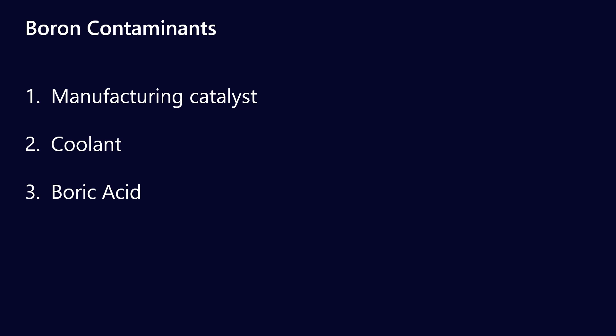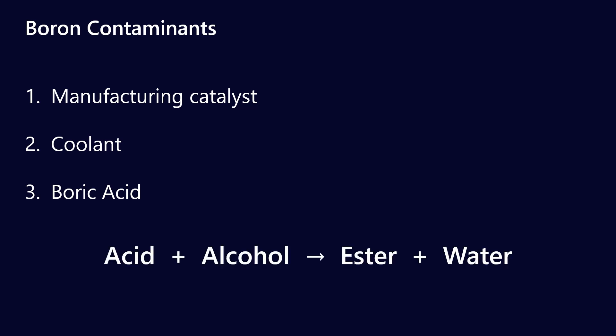Boric acid can also be a contaminant. If you remember we talked about ester synthesis: acid plus alcohol makes ester plus water. Well this reaction can actually go in reverse — that's called a hydrolysis reaction. So water plus ester can give you alcohol plus acid, and that's how borated esters can form boric acid. In some cases you may not want that. For example, there are issues in wind turbine gearboxes where older-style gear oils with genesis in engine oil formulations can form boric acid, which precipitates out, clogs filters, and causes problems. So boric acid, although sometimes used as an additive, can also act as a harmful contaminant.